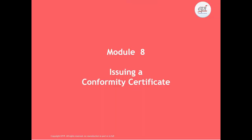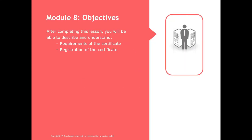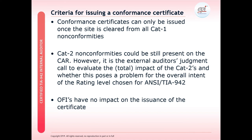Under Module 8, we will look at the process of issuing a conformity certificate. You should be able to describe and understand the requirements of a certificate and how to register these certificates. On this slide, we will look at criteria for issuing a conformance certificate. Certificates can only be issued once the site is cleared from all major CAT 1 nonconformities. Minor CAT 2 nonconformities could still be present on the corrective action report and plan; however, it is the external auditor's judgement call to evaluate if the total impact of the sum of the CAT 2s doesn't pose a problem for the overall intent of the rating level being chosen.